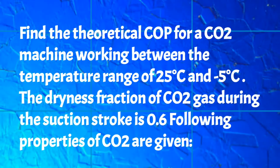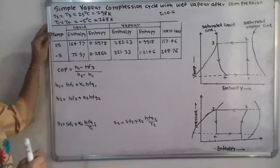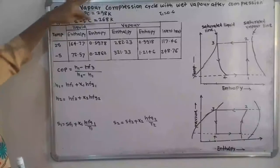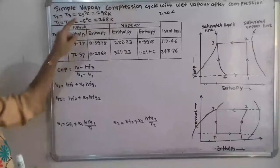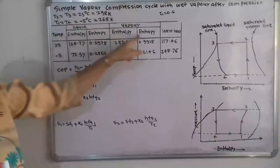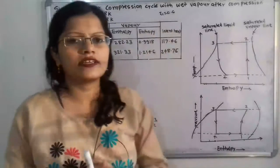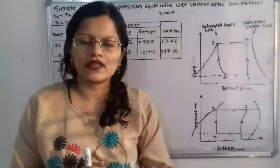Following properties of carbon dioxide are given. There is a table where the temperature range, liquid and vapor enthalpy, entropy data, and the latent heat are given.